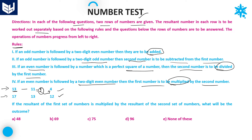Now we have 2 followed by 4. 2 is an even number followed by 4, which is a perfect square. According to rule 3, the second number is divided by the first number: 4 divided by 2 equals 2. Therefore, the resultant of the first row of numbers is 2.